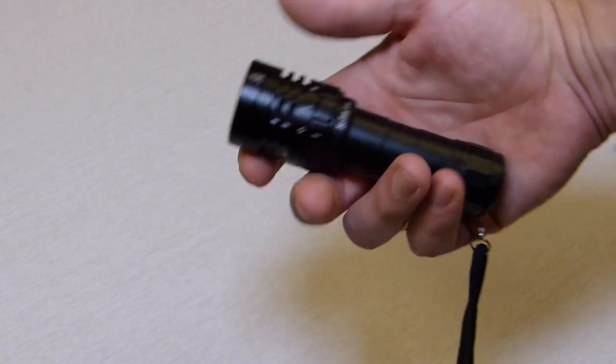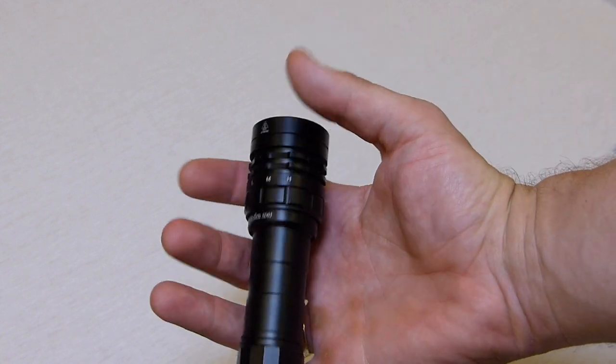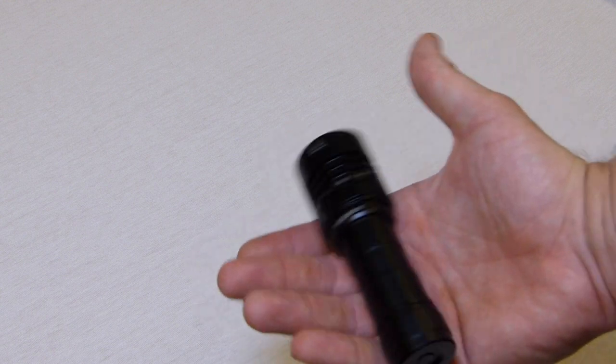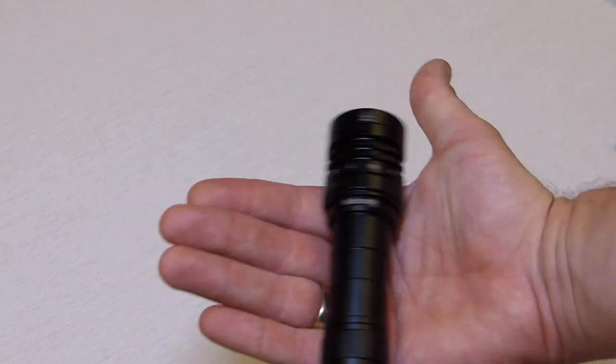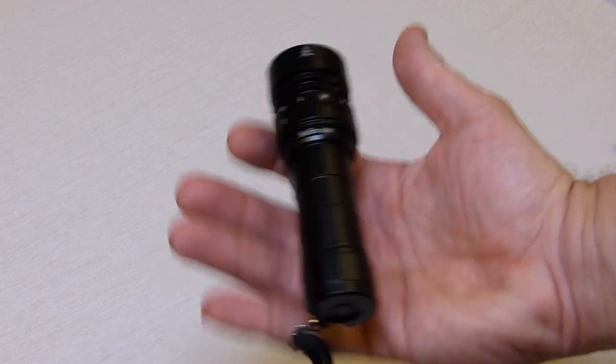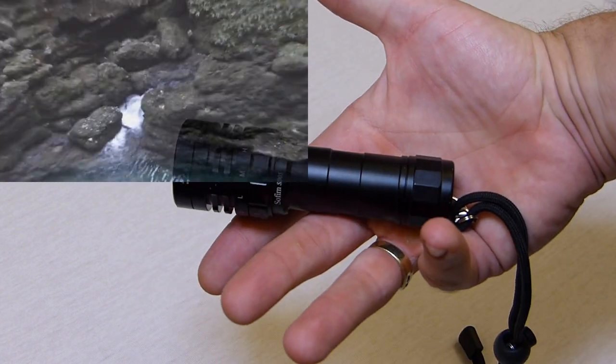Well, for a scuba diver, this would probably be a backup light. But for a snorkeler, that could be a primary light. I do a lot of snorkeling, never got to do scuba diving. I didn't have the time for it. But usually I use my Armitech Doberman, but this one is just way brighter and it's also a little bit more compact.